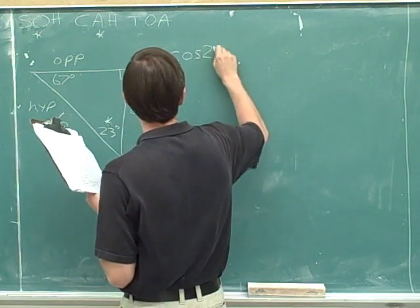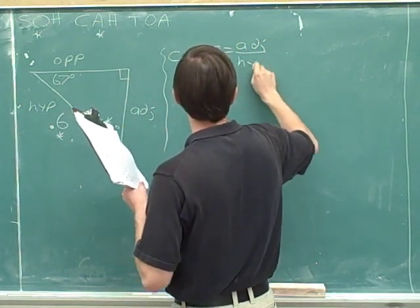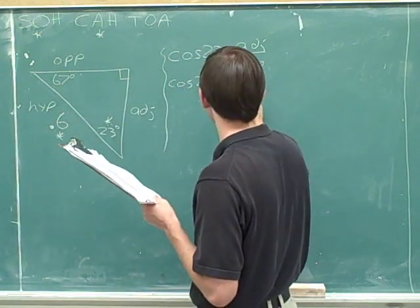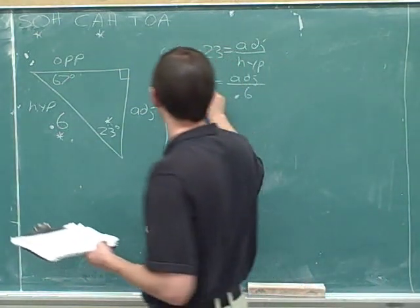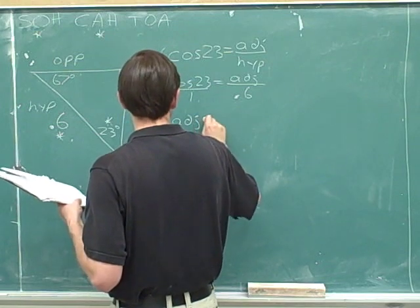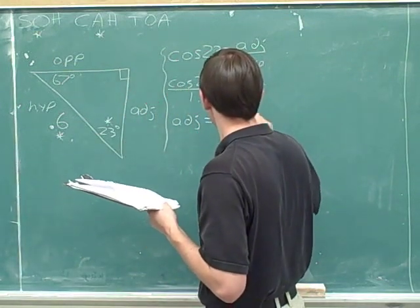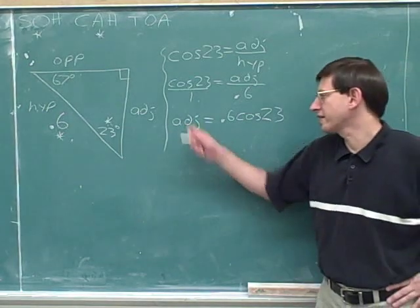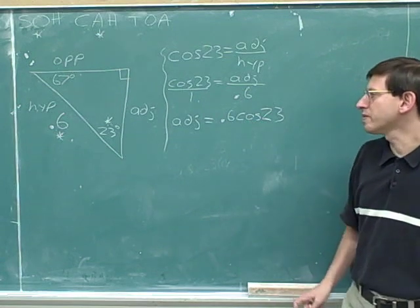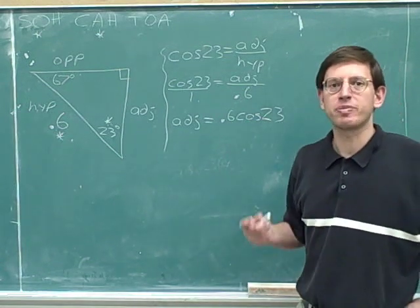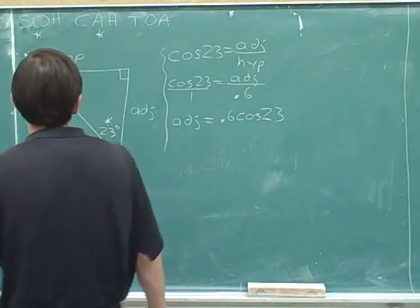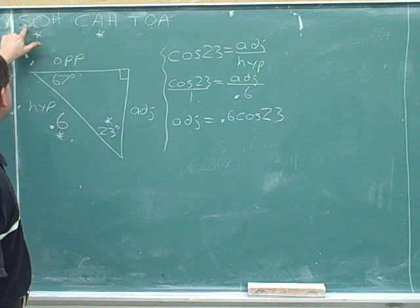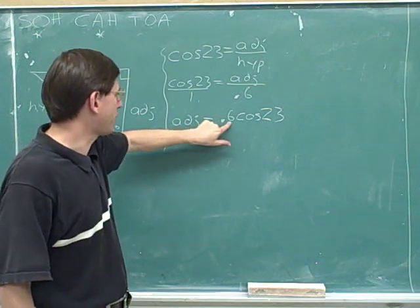Cosine 23 equals the adjacent side over hypotenuse. We don't know how long the adjacent side is, but we do know how long the hypotenuse is: 0.6. Now we can use cross multiplication. 1 times the adjacent is just the adjacent side, and then we also have 0.6 times the cosine of 23. If you're given the hypotenuse, you can figure out the adjacent side as the hypotenuse times the cosine. The adjacent side is just the hypotenuse times the cosine.